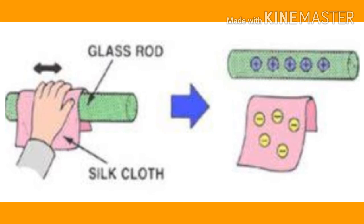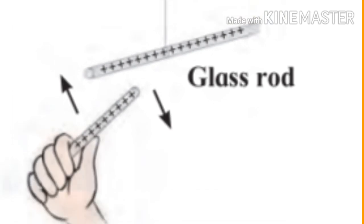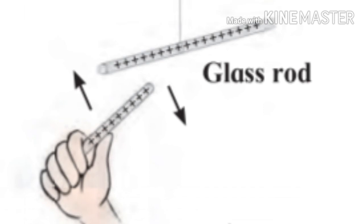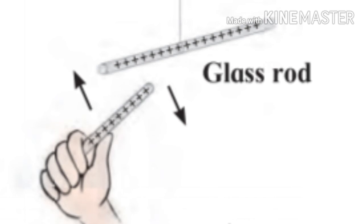To understand static electricity, you can perform these activities yourself. Rub one end of a glass rod against a silk cloth and suspend this rod freely in air with the help of a thread. Now charge another glass rod in the same manner and bring it near the suspended rod. The two rods push each other away due to repulsion — like charges repel each other. Both glass rods have the same positive charge, therefore they push each other away.